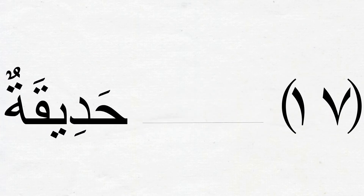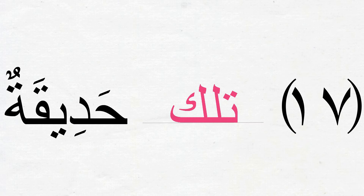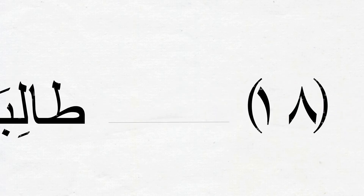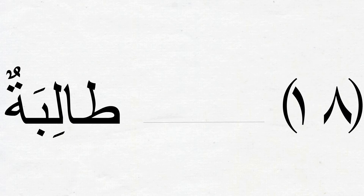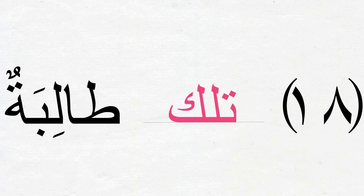Number 17: حَدِيقَةٌ is our recently learned new word which means 'a garden'. حَدِيقَةٌ is مُؤَنَّث, so we will say تِلْكَ حَدِيقَةٌ — that is a garden. Number 18: طَالِبَةٌ is مُؤَنَّث, so we should write تِلْكَ in the blank — تِلْكَ طَالِبَةٌ, that is a student.